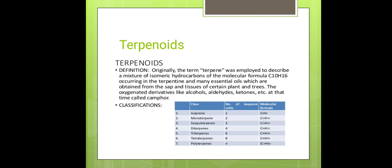And trees. The oxygenated derivatives of terpenoids — like alcohols, aldehydes, and ketones — were at that time called camphor. Terpenoids were originally described by the term 'terpene,' referring to isomeric hydrocarbons of molecular formula C10H16.